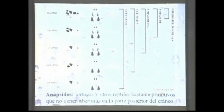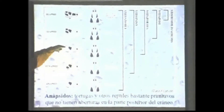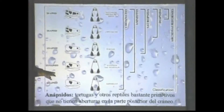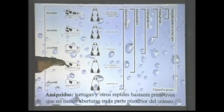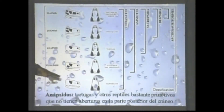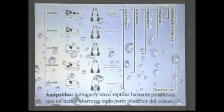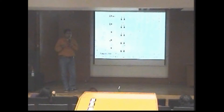El siguiente grupo en divergir fue el de los anápsidos. Dentro de los anápsidos encontramos el grupo de los milerétidos. Los anápsidos son todos aquellos reptiles cuyo cráneo carece de huecos detrás de la órbita del ojo, llamados fenestras temporales. Los sinápsidos tenían una fenestra temporal inferior; los diápsidos tenían fenestra temporal superior e inferior. El modelo anápsido carece de fenestras, pero lo que sucedió fue que esas fenestras se cerraron porque no eran eficientes para la manera de masticar de estos reptiles.